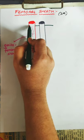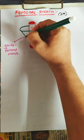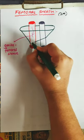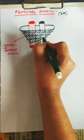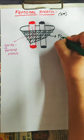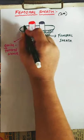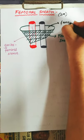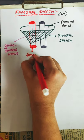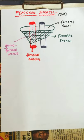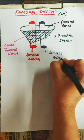I'll be drawing the femoral sheath. As you can see in the diagram, this is the femoral sheath — the green part is the femoral sheath. And the hole here is known as the femoral canal. This is the femoral artery, and the next one is the femoral vein.